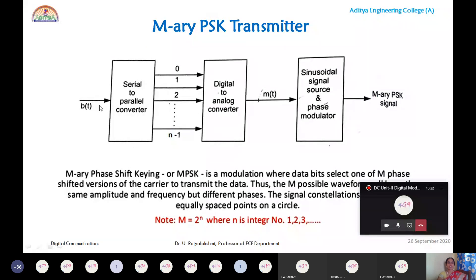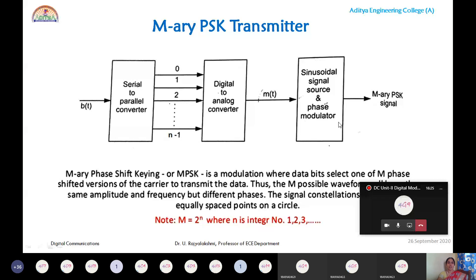The input b(t) is applied to the serial-to-parallel converter, which splits b(t) into M symbols each consisting of N bits. Because you are grouping N bits per symbol, it is called 2^N-ary PSK or M-ary PSK. All these are then applied to a digital-to-analog converter, converting the group of bits into analog form.